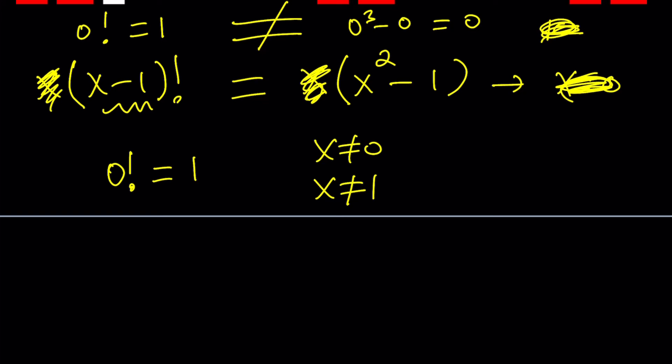So under these conditions, we can go ahead and expand x minus 1 factorial. How? We can go ahead and write it as x minus 1 times x minus 2 factorial. The goal here is to take out a factor of x minus 1, so I can use it along with the difference of two squares.